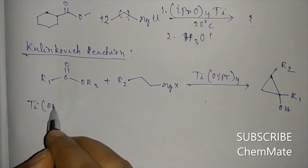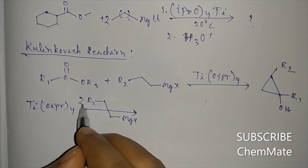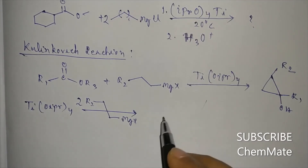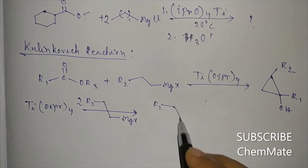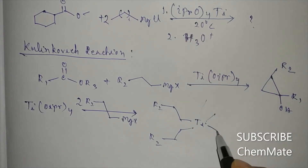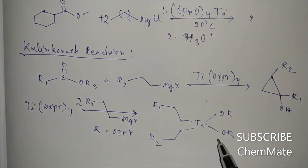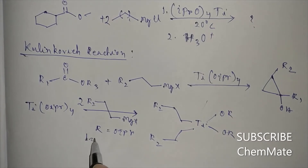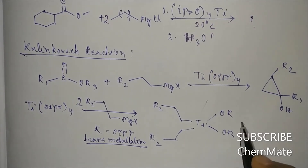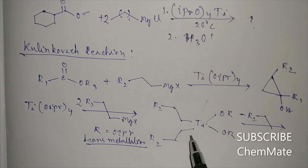First, transmetallation will take place. The Grignard reagent will replace two of the ligands on titanium. Here, where R equals O-iPr, this transmetallation reaction forms a new titanium species. After that, one molecule is removed.